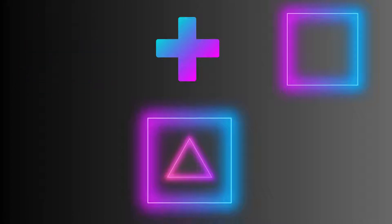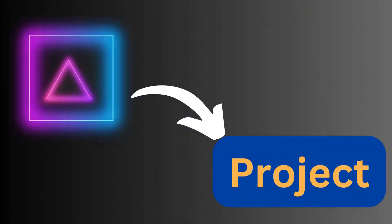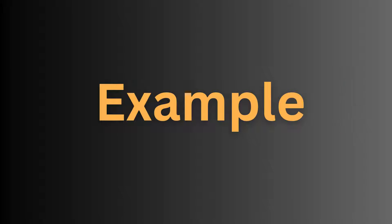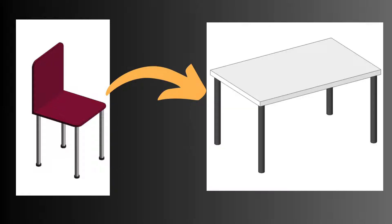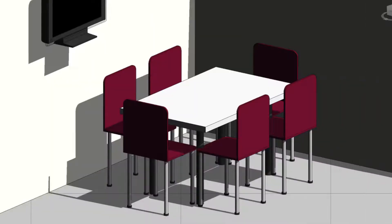First we create one family, then load it into another family, and then load that whole family into the project. These nested families allow for unparalleled flexibility and customization in your project. Let's start with a basic example: I'll use a basic chair and basic table family, load the chair family into the table family, associate the parameters, and then load that whole family into the project.